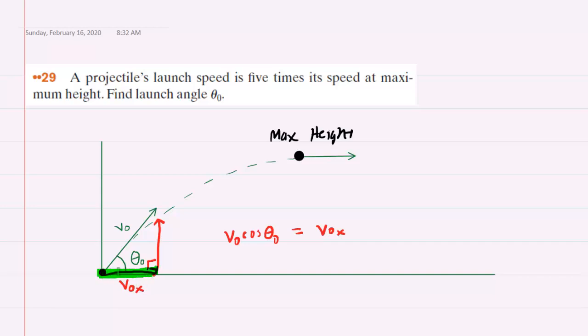Remember that in the x direction whatever the initial velocity is will be constant throughout the problem because there's no acceleration in the x direction. So this velocity vector right here is the same as the x component, so it is v naught cosine theta naught. This represents the speed at the maximum height.